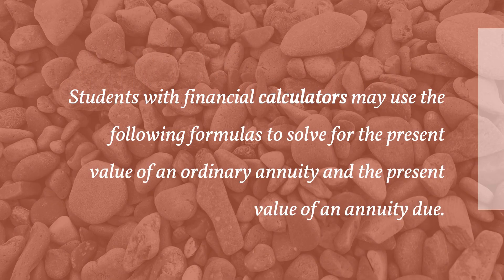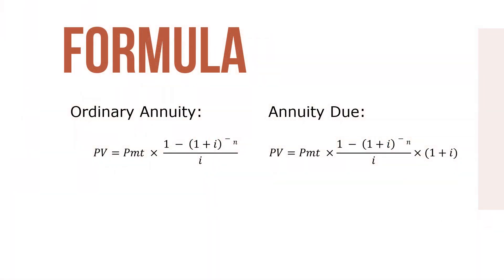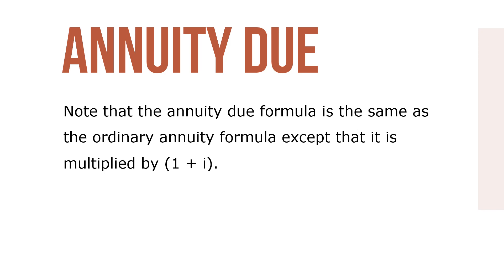Students with financial calculators may use the following formulas to solve for the present value of an ordinary annuity and the present value of an annuity due. In these formulas, PV equals present value, PMT equals annuity payment, I equals interest rate per period (the nominal rate divided by periods per year), and N equals the number of periods (years times periods per year). Note that the annuity due formula is the same as the ordinary annuity formula, except that it's multiplied by (1 + I), to account for the fact that with an annuity due, each payment earns interest for one additional period because payments are made at the beginning of each period, not the end.